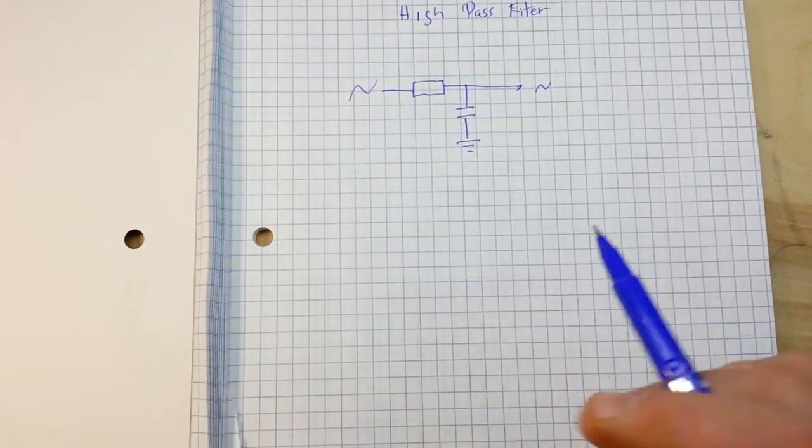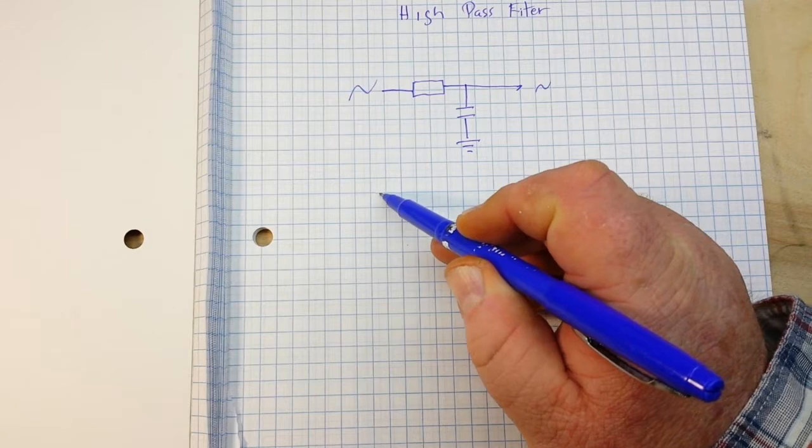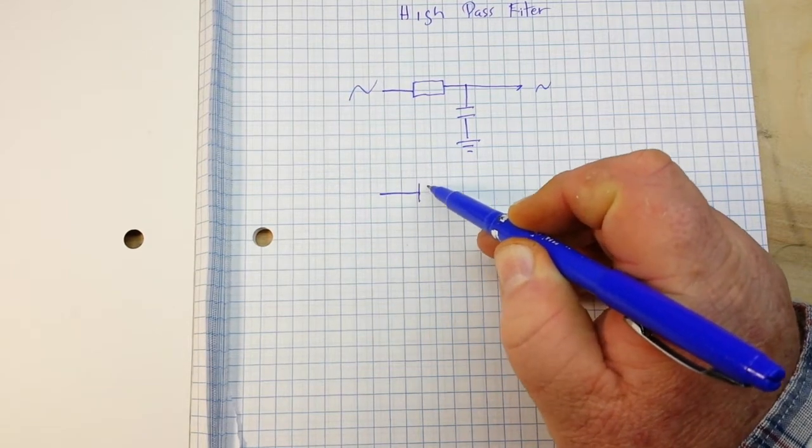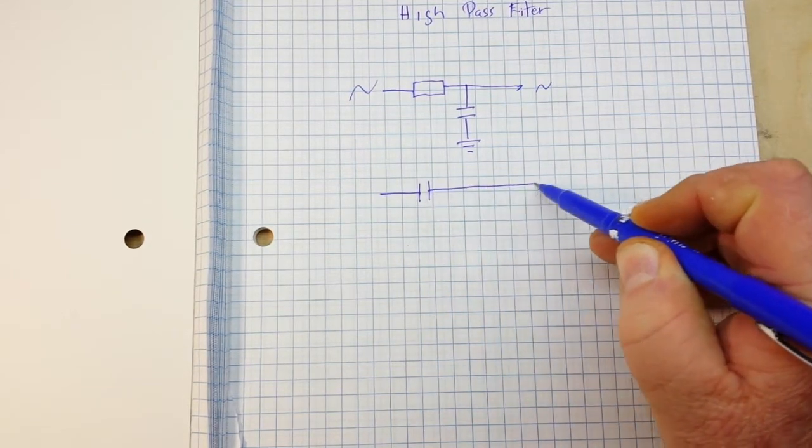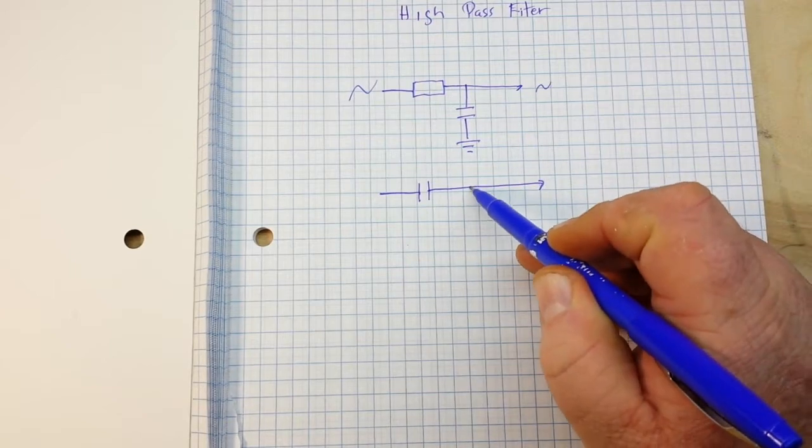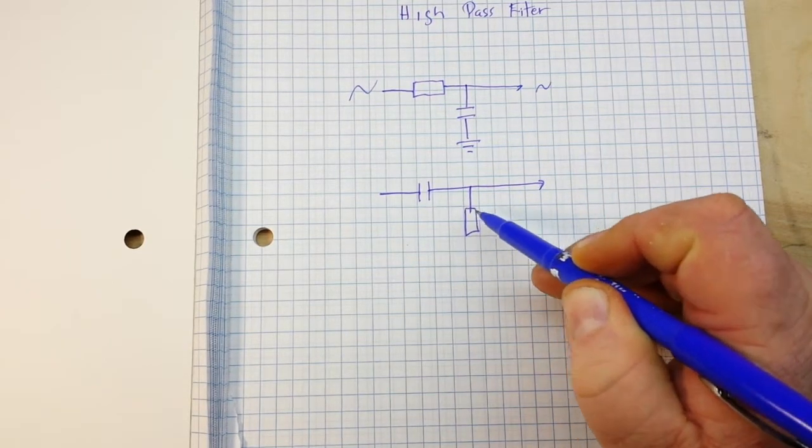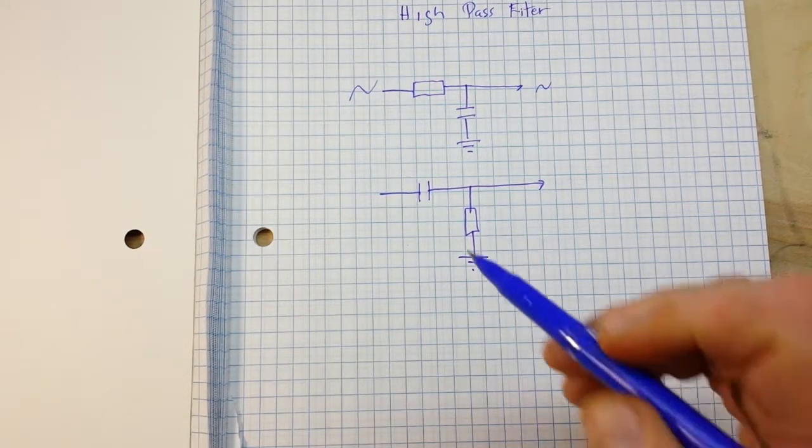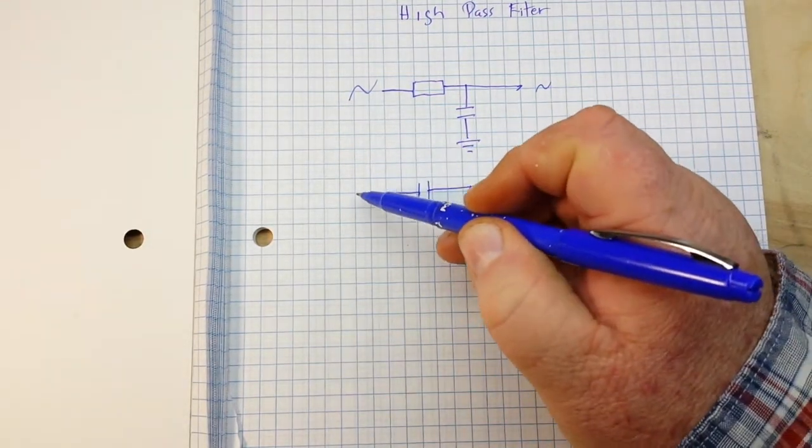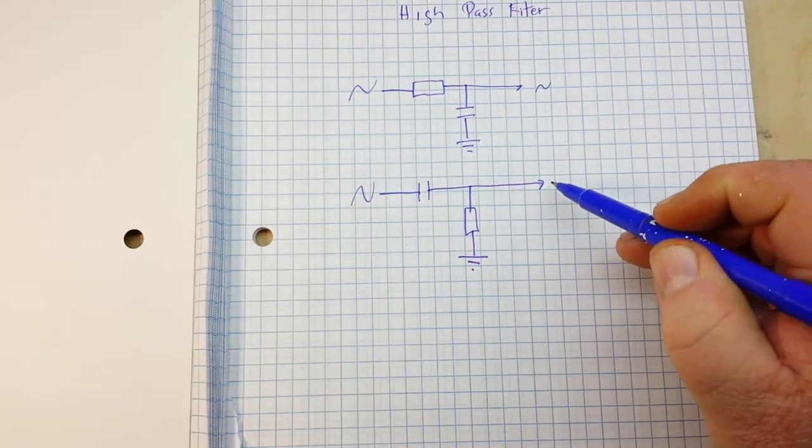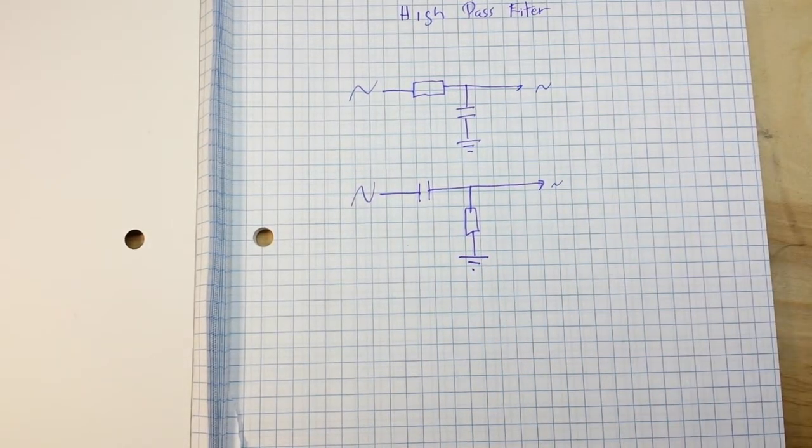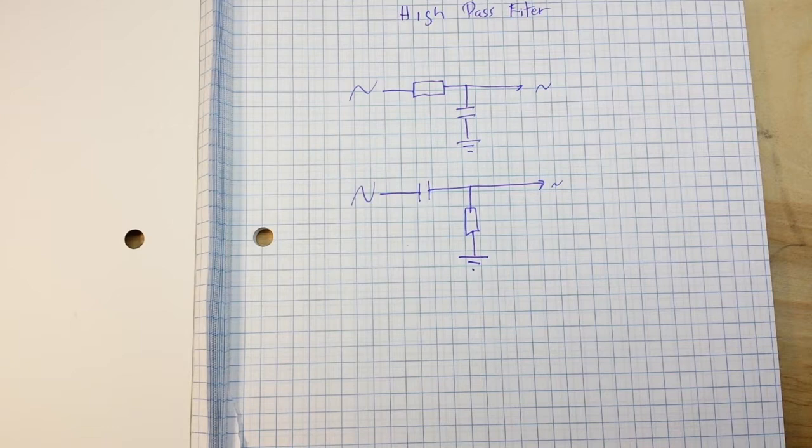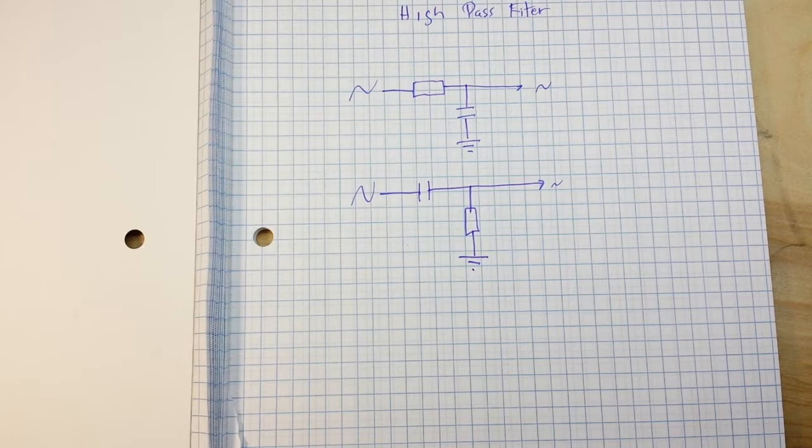Well, the low-pass filter is simply the opposite of that. So our input comes in, goes through the capacitor to a resistor to ground. This is a first-order high-pass filter. So anything higher than the cutoff frequency passes, anything lower is attenuated.